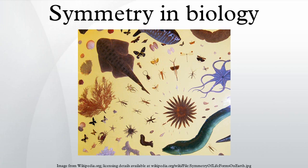Biradial symmetry is a combination of radial and bilateral symmetry, as in the ctenophores. Here, the body components are arranged with similar parts on either side of a central axis, and each of the four sides of the body is identical to the opposite side but different from the adjacent side. This may represent a stage in the evolution of bilateral symmetry from a presumably radially symmetrical ancestor.